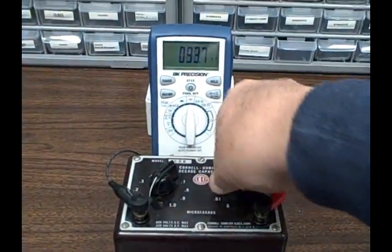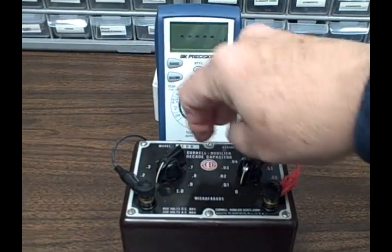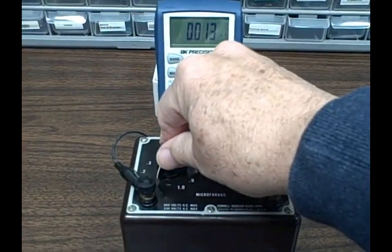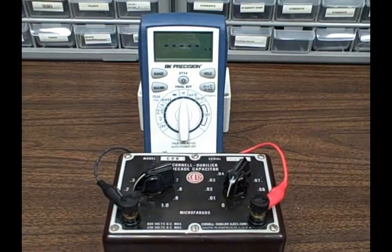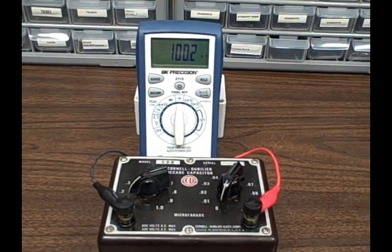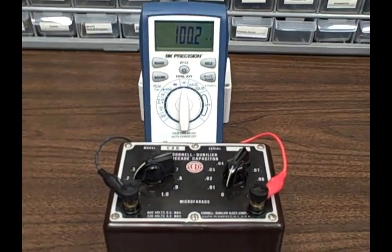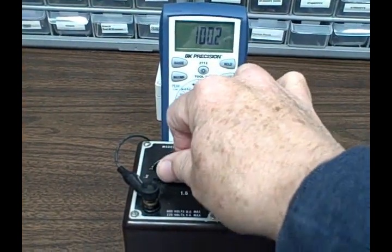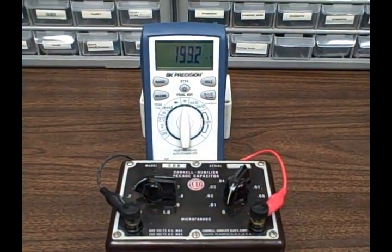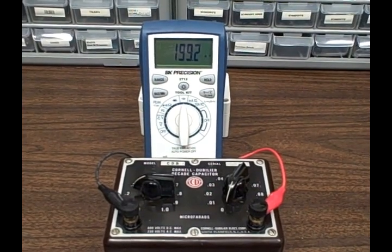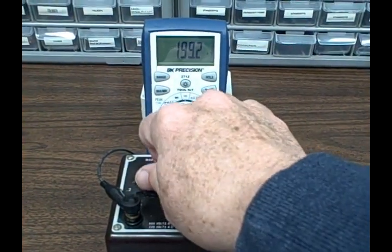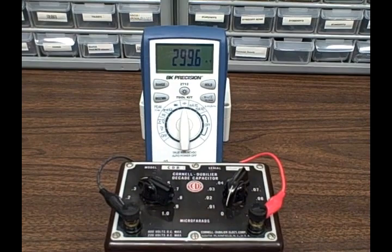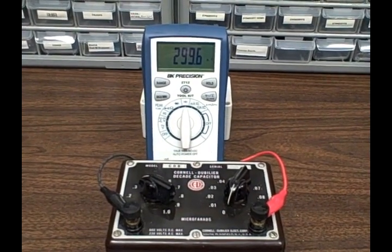All right, let's go back down to zero. We're going to take a look at the most significant figure. This would be 0.1 microfarads, the first decade. I'm getting 100.2 nanofarads. 0.2 microfarads, I'm getting 199.2. 0.3 microfarads, 299.6.